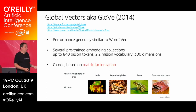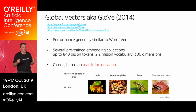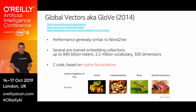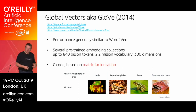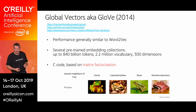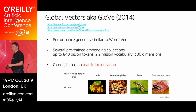GloVe is C code based on matrix factorization — which makes sense because what we're really building is this huge co-occurrence matrix, and we use matrix factorization to shrink it. As an example from the research paper, if you look for words closest to 'frog,' you get related species like litoria and leptodactylus — they have pictures, which helps because these are all types of frogs.